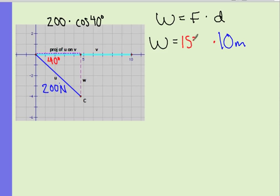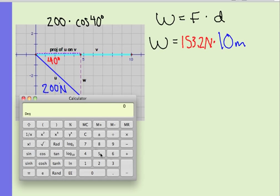Just so you can see that real quick. 200 times the cosine of 40 degrees. No problem.